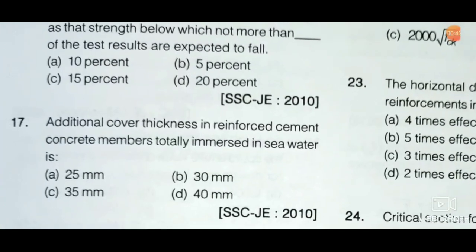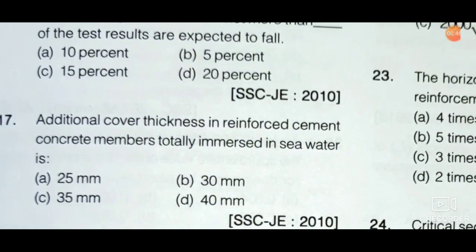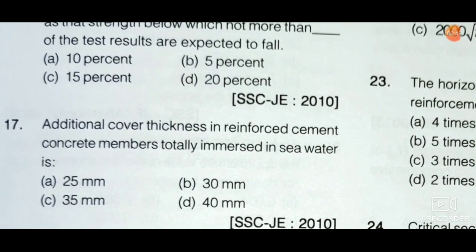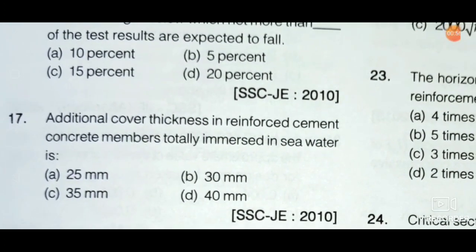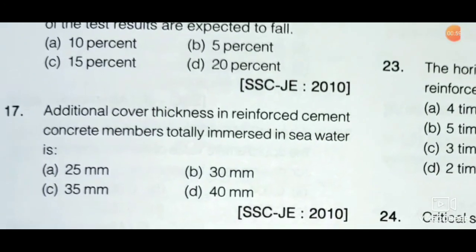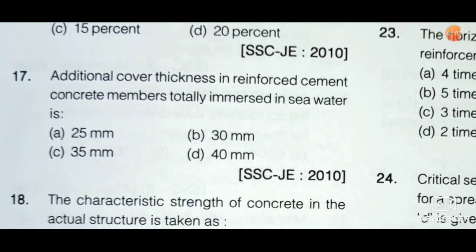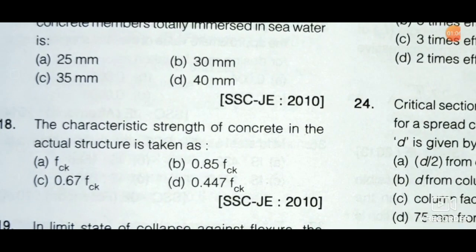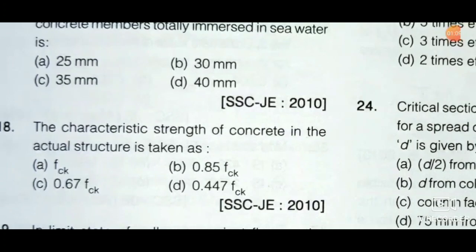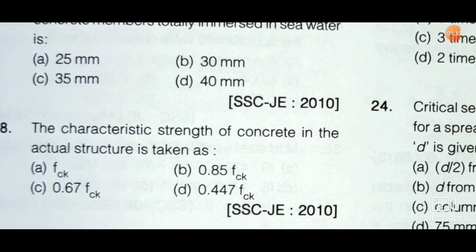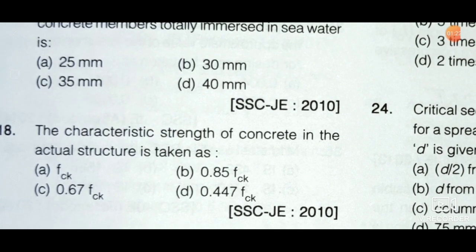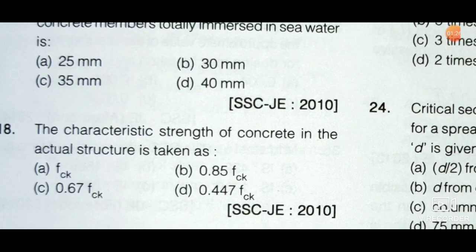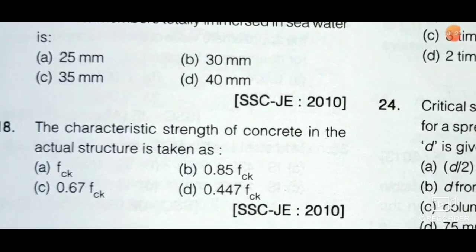Next question: Additional cover thickness in reinforced cement concrete members totally immersed in sea water — option A: 25 mm, option B: 30 mm, option C: 35 mm, option D: 40 mm. The correct answer is option D: 40 mm. Next question: The characteristic strength of concrete in the actual structure is given as — option A: fck, option B: 0.85 fck, option C: 0.67 fck, and option D: 0.447 fck. The maximum characteristic strength used in actual structure is restricted to 0.67 fck, so option C is the correct answer.